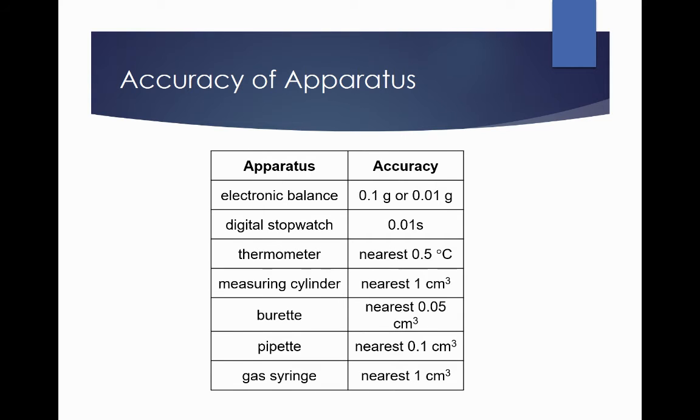In terms of the accuracy of the apparatus, I hope you recall in titration, you normally leave the burette readings to two decimal places and the pipette reading is usually 25.0, which is one decimal place.